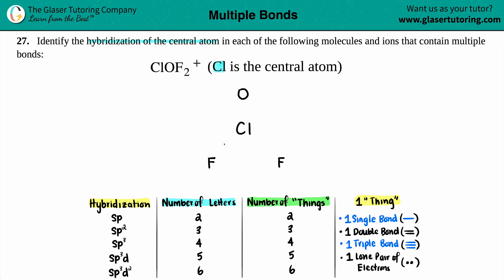Now let's put the valence electrons — this goes by your periodic table. Fluorine is in group 7A or 17, so we put seven valence electrons on each fluorine. Chlorine is also a halogen in the same group, so it also has seven valence electrons. And oxygen is in group 6A or 16, so that's six valence electrons.